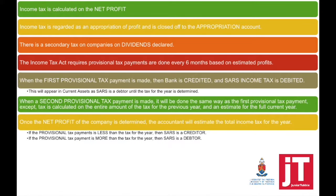How does all of this work? Income tax is calculated on the net profit. Your income tax is an expense which will appear in the nominal account section, but it doesn't form part of your operating expenses. It is regarded as an appropriation of the profits, and that is why it's closed off to your appropriation account.